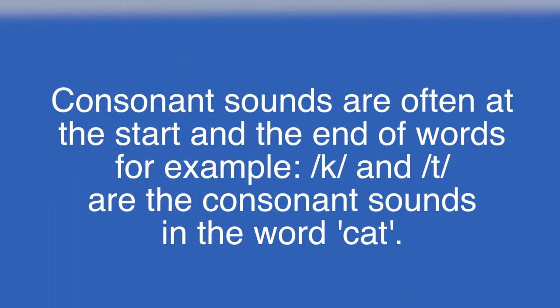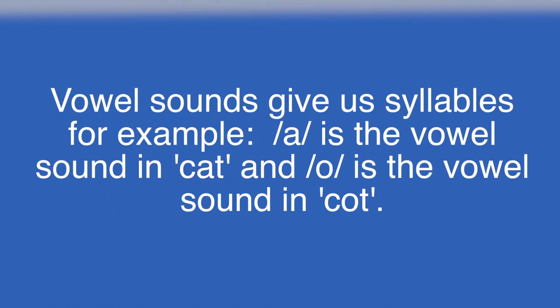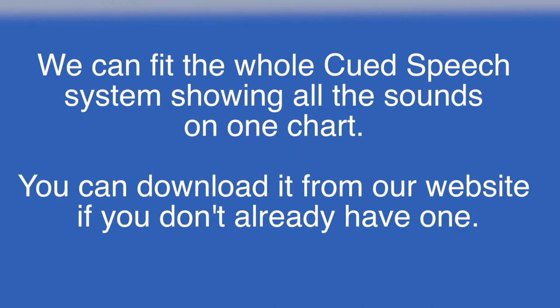Consonant sounds are often at the start and the end of words. For example, c, k and t are the consonant sounds in the word 'cat.' Vowel sounds give us syllables. For example, 'a' is the vowel sound in 'cat' and 'o' is the vowel sound in 'cot.' We can fit the whole cued speech system showing all the sounds on one chart. You can download it from our website if you don't already have one.